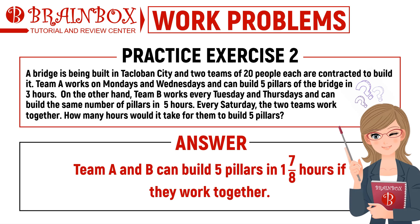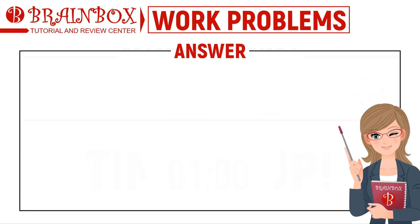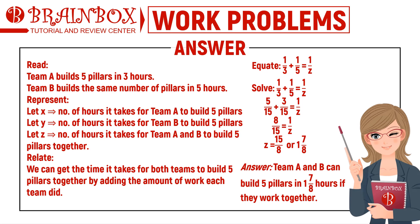Time is up. Team A and B can build five pillars in one and seven eighths of an hour if they work together. In this problem, we are looking for z, the time it takes to build five pillars when both teams work together. Using the general formula and substituting the values: 1 over 3 plus 1 over 5 equals 1 over z. Solving, we obtain z equals fifteen over eight, or one and seven eighths. Therefore, Team A and B can build five pillars in one and seven eighths of an hour.